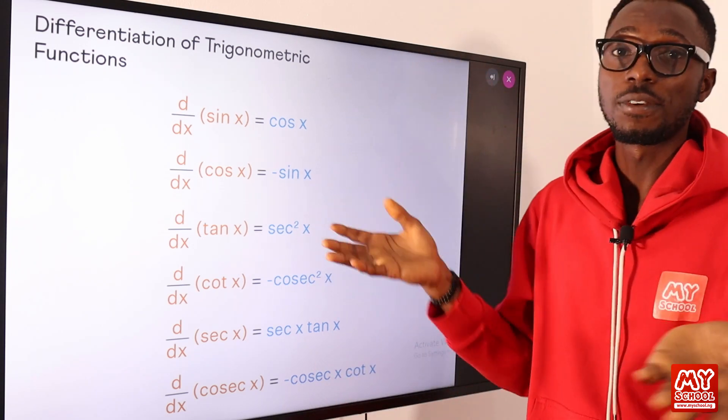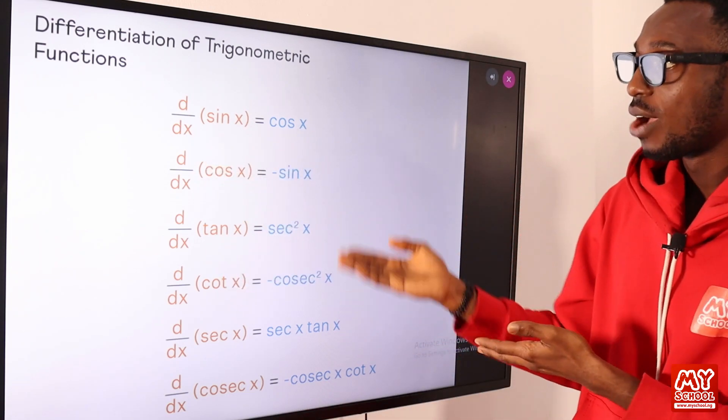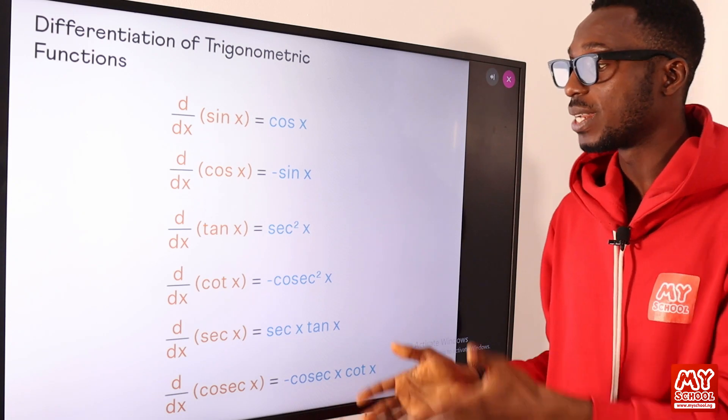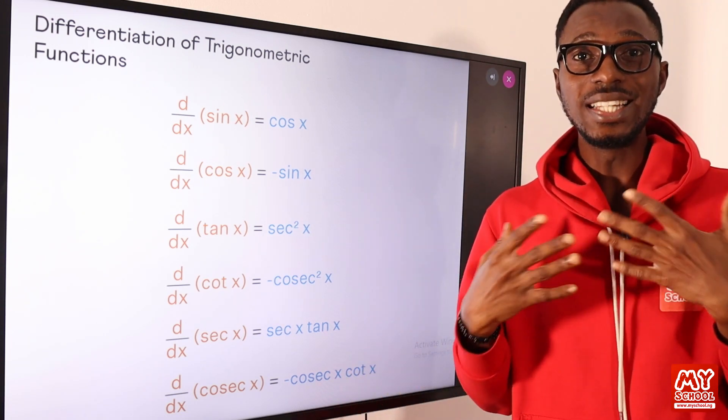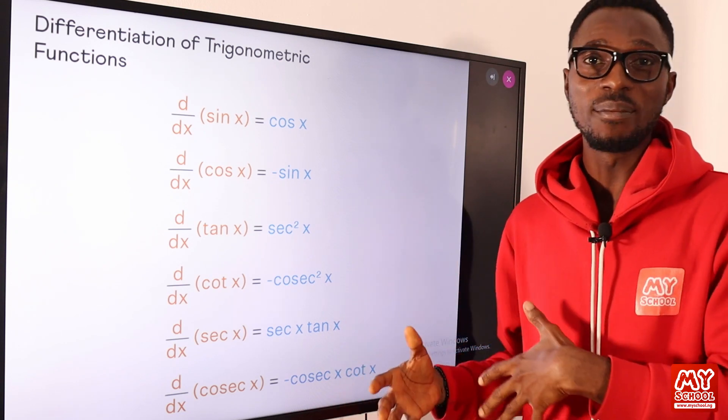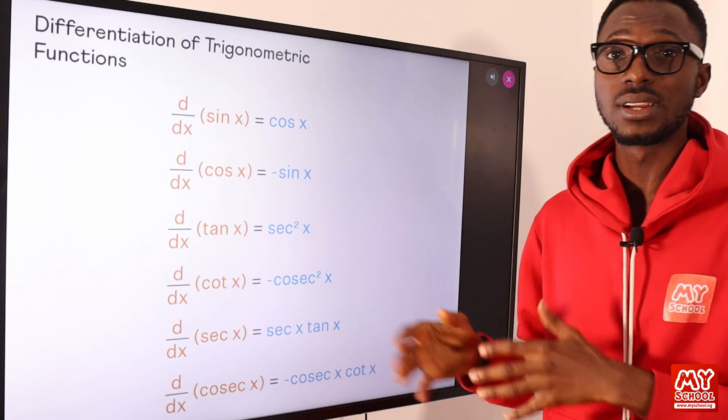For the trigonometric function, when you differentiate sin x, you will get cos x. When you differentiate cos x, you will get minus sin x. These are some of the trigonometric functions that we are going to need as we go ahead in solving some examples.